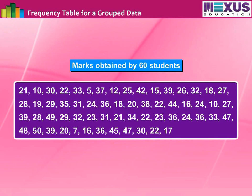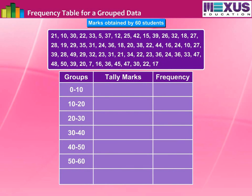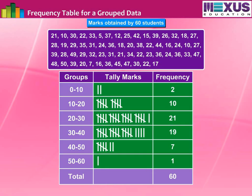Let us learn how to tabulate a frequency table for grouped data with an example. Consider the following marks out of 50 obtained in mathematics by 60 students of class 7. If we make a frequency distribution table for each observation, the table would be too long. So for convenience, we make groups of observations such as 0 to 10, 10 to 20, and so on, and obtain a frequency distribution of the number of observations falling in each group. Mark tally marks for each value beside the class it belongs to. The frequency distribution table for the above data can be as shown.